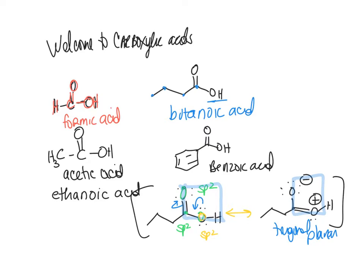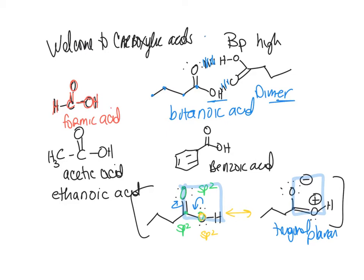Boiling points are going to be very high for carboxylic acids, because they can dimerize. You can have a lone pair forming a hydrogen bond with another butanoic acid molecule. This dimer creates an intermolecular force requiring more energy to break — which is what happens when you boil compounds. For solubility, they are very soluble in alcohols, and as you increase carbon chain length, they become less soluble in water.